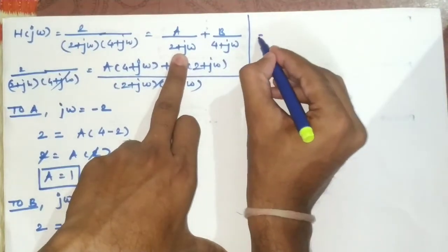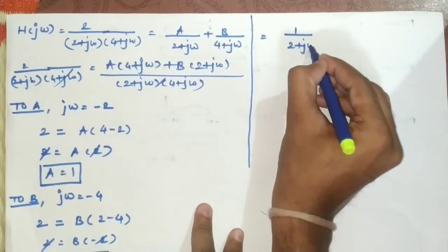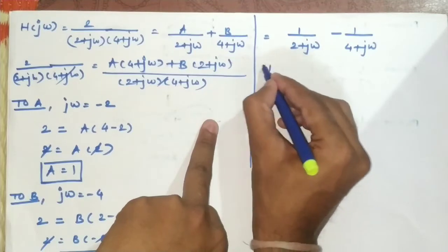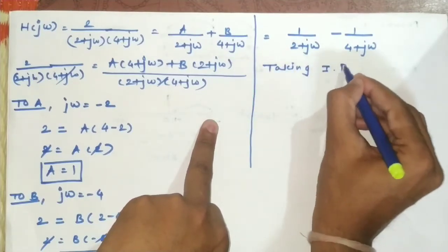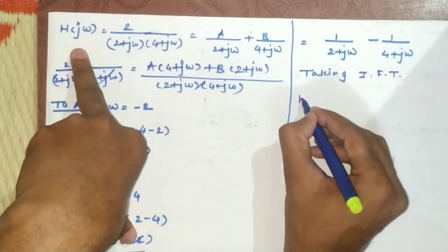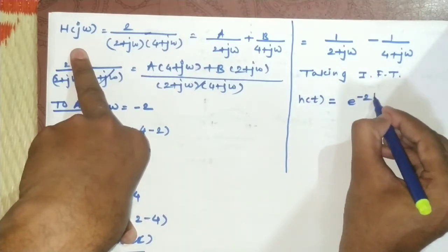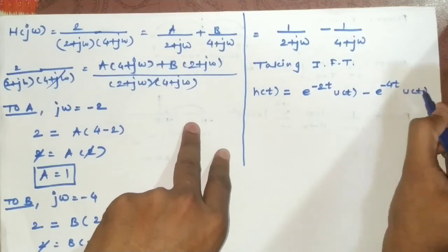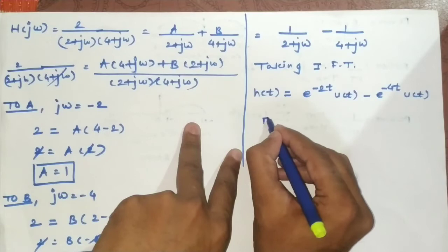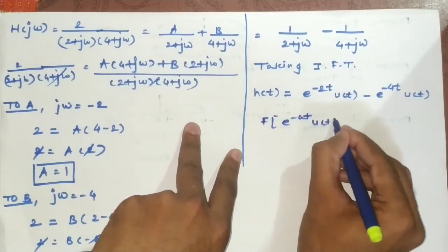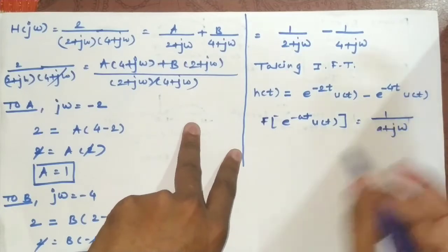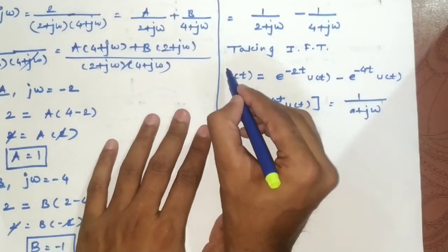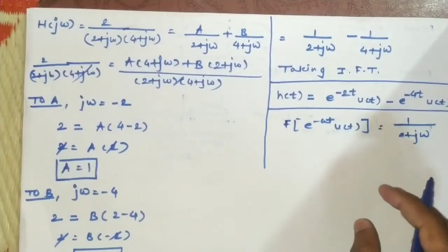Substituting the values, H(jω) = 1/(2 + jω) − 1/(4 + jω). Taking the inverse Fourier transform, H(t) = e^(−2t)·u(t) − e^(−4t)·u(t). This follows from the known Fourier transform pair: the inverse of 1/(a + jω) is e^(−at)·u(t), with a = 2 and a = 4 respectively. This is the answer to the first part: the impulse response h(t).